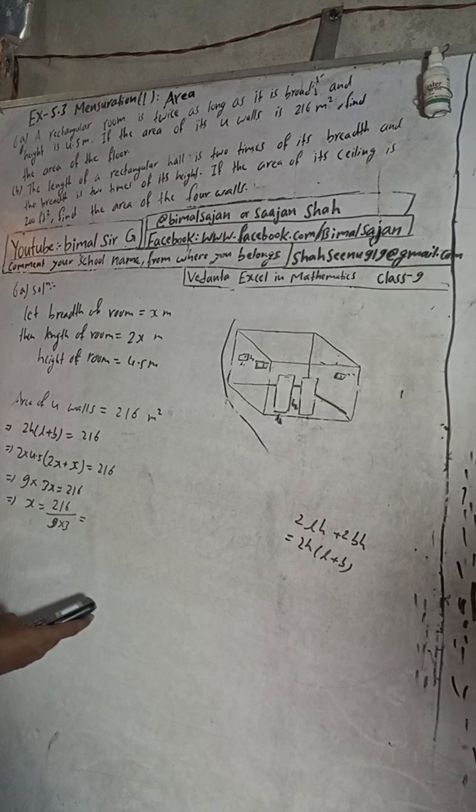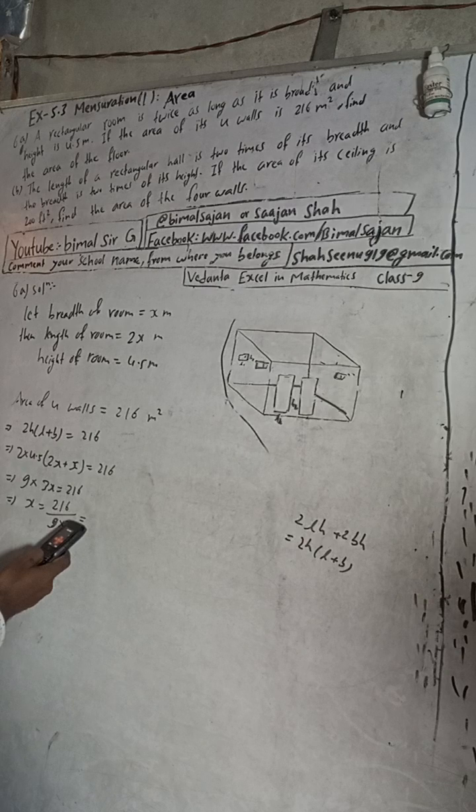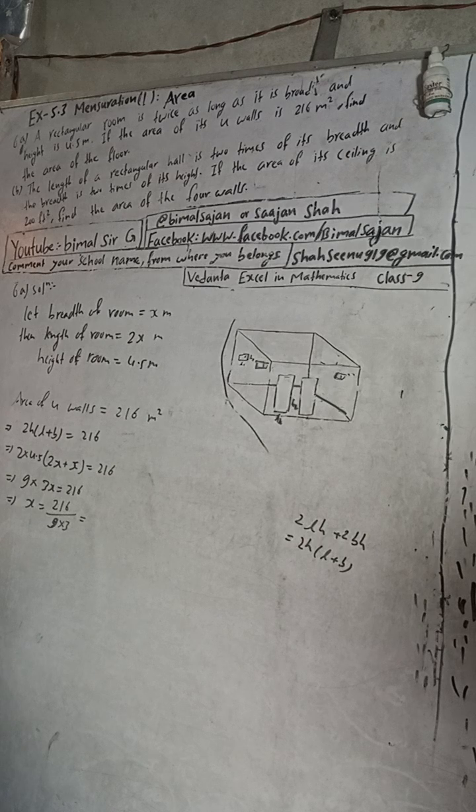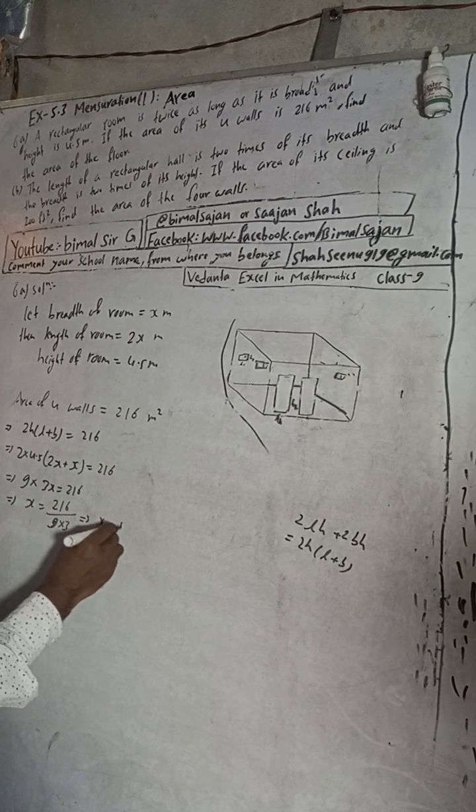216 divided by 9, 3 times 27, so we get x equals 8.